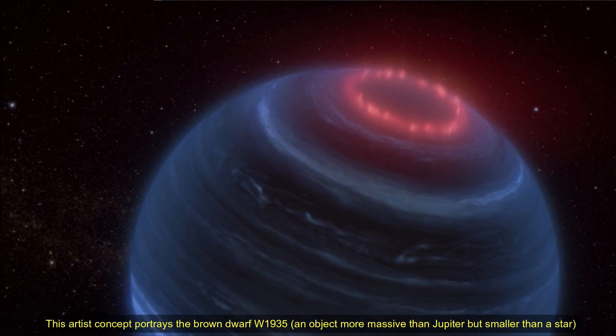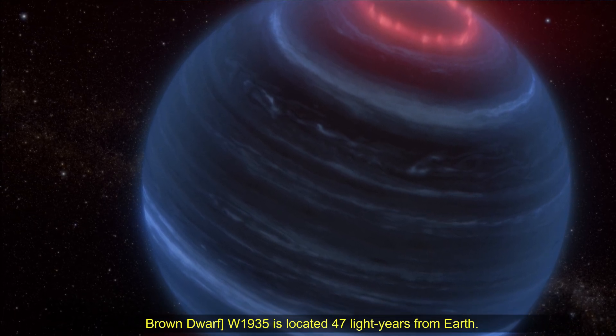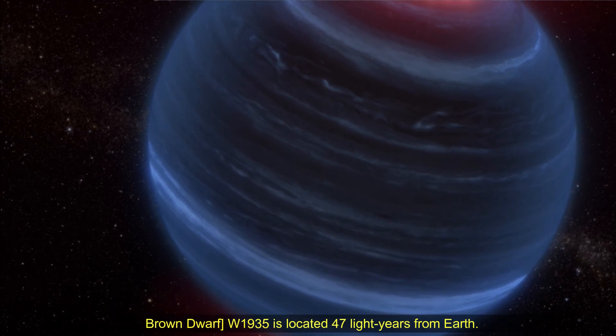Brown dwarf, an object more massive than Jupiter but smaller than a star. W1935 is located 47 light years from Earth.